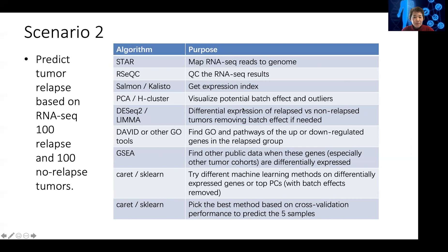A sample here would be like one library that has been sequenced, not individual reads. In this case, a sample would be one tumor or one normal — it's just one RNA-seq dataset, either a paired-end with two FASTQ files, or if it's single-end, just one FASTQ file with all the reads for that sample.